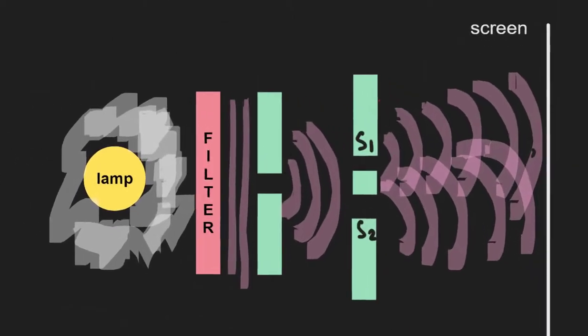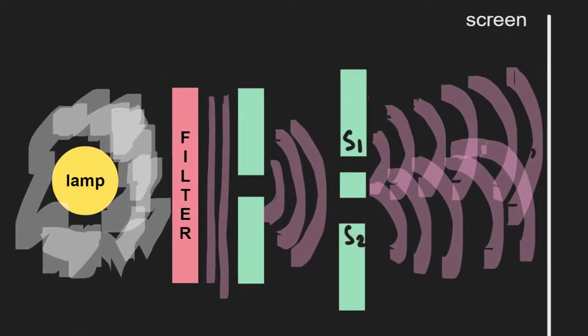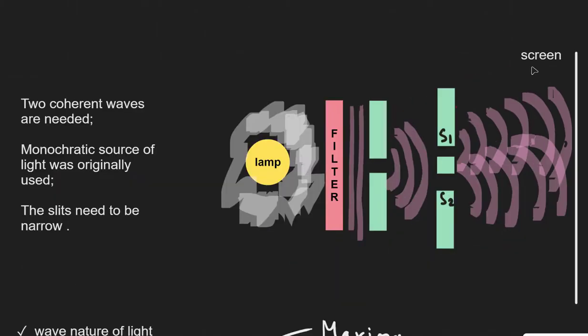The experiment that we have here actually proved that light had wave-like nature. And if you study quantum physics later on, you're going to see how light has particle nature as well. So how did Thomas Young actually show the wave nature of light?